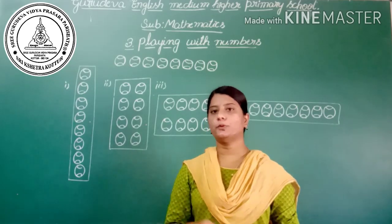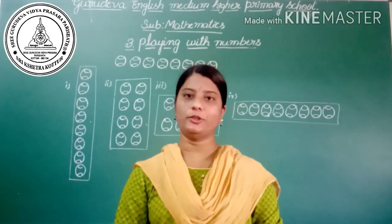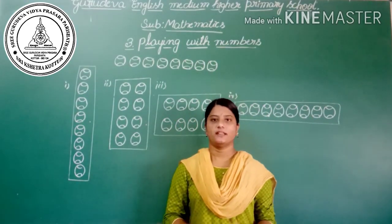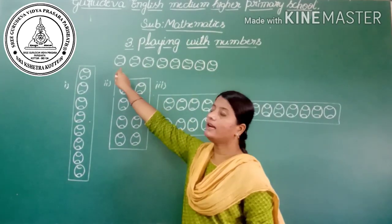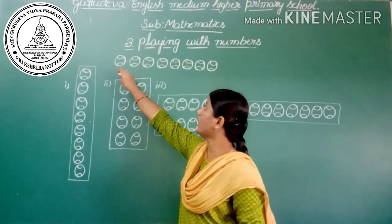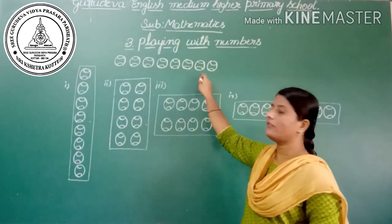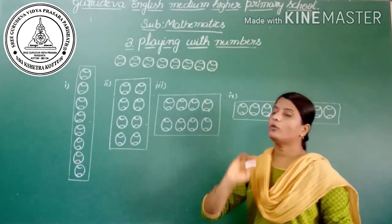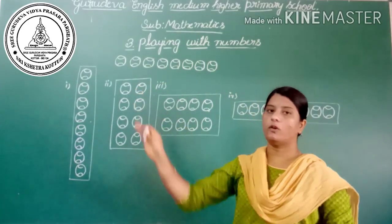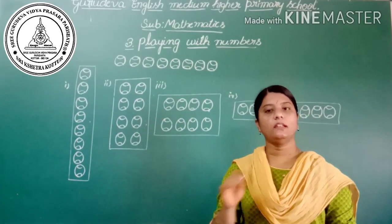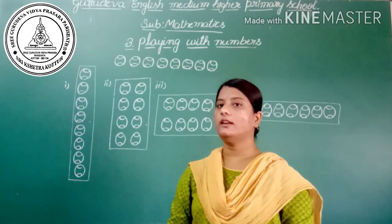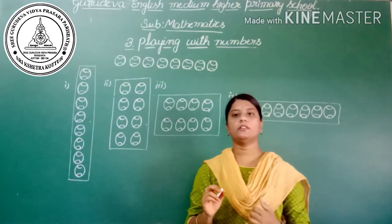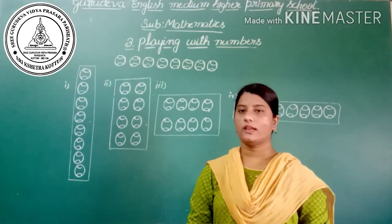Before going to play with numbers, we are going to play with balls. I have taken 8 balls — 1, 2, 3, 4, 5, 6, 7, 8. I want to arrange these balls in a row in such a way that each row has an equal number of balls.